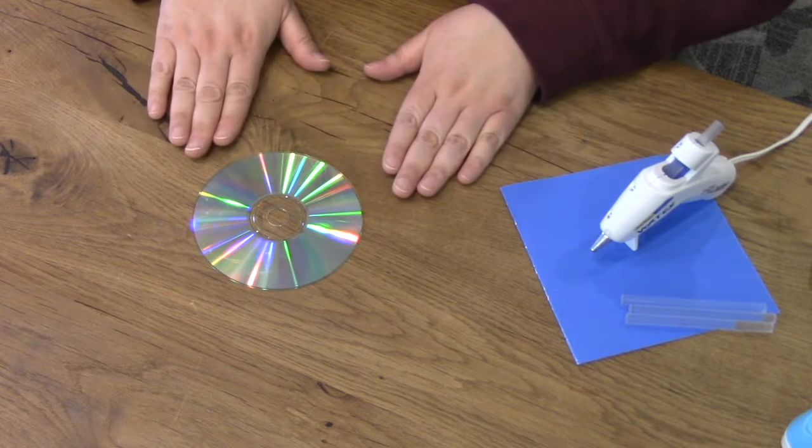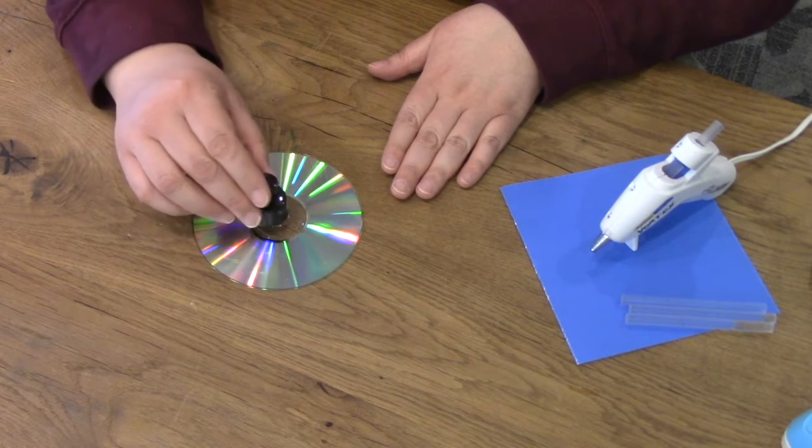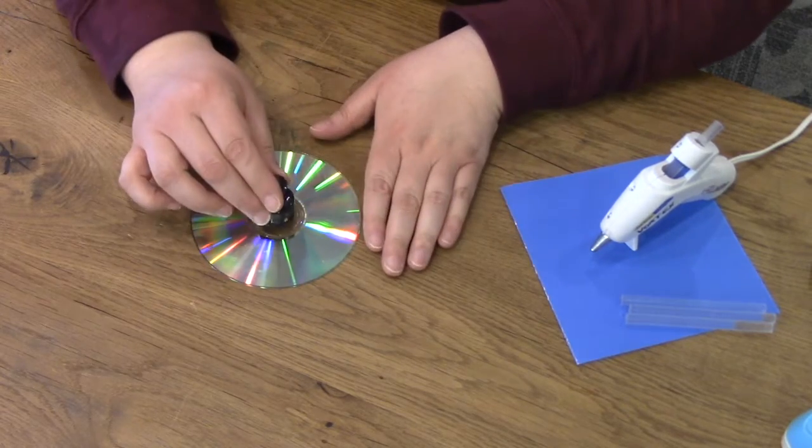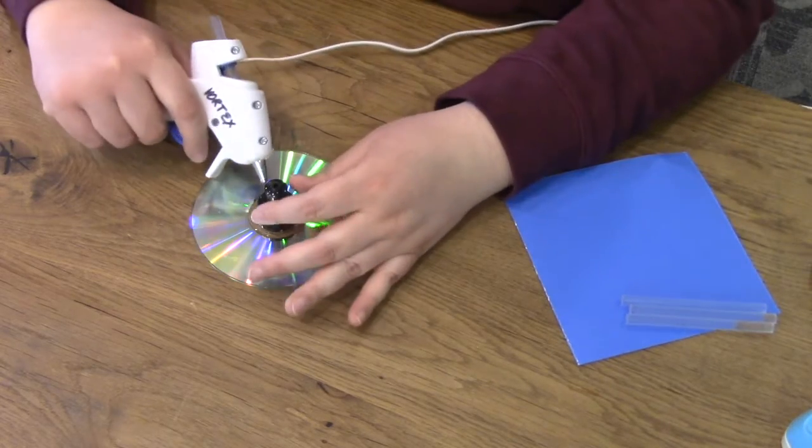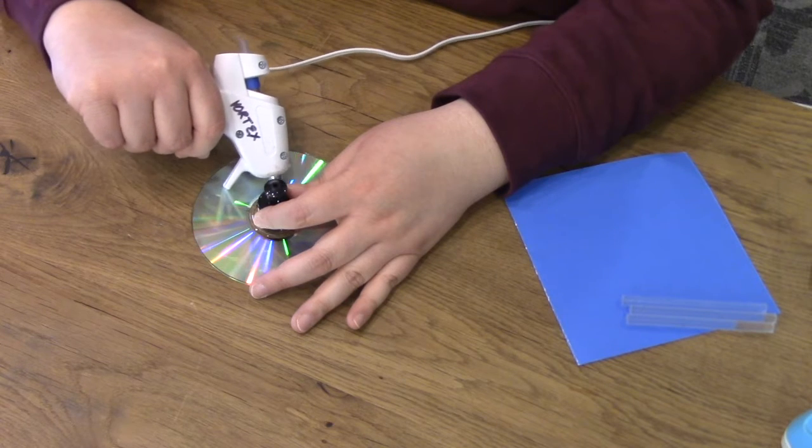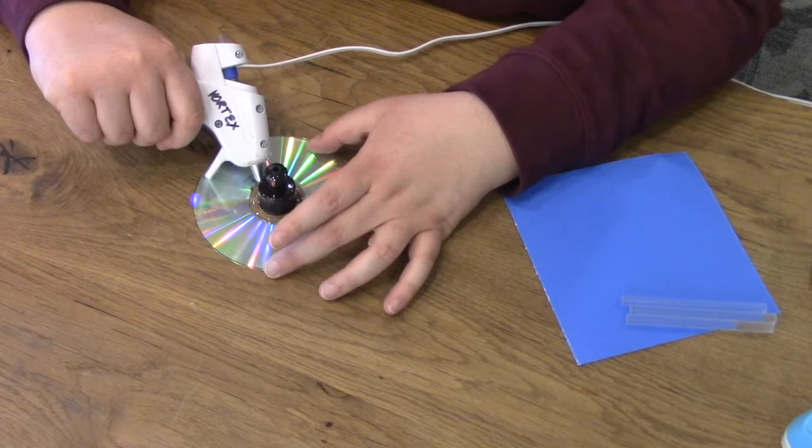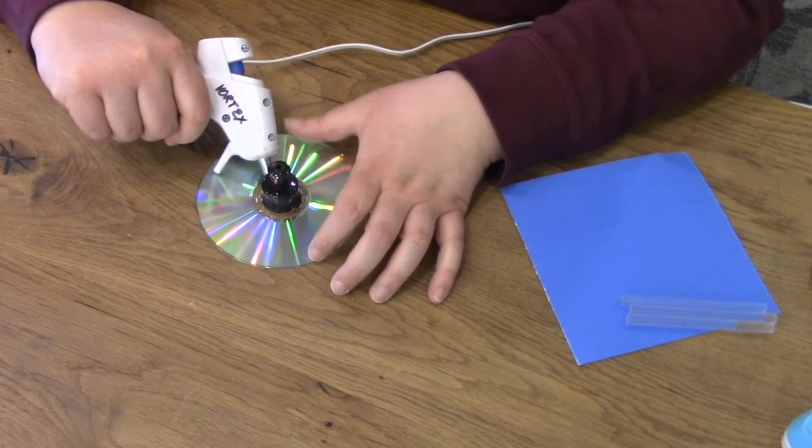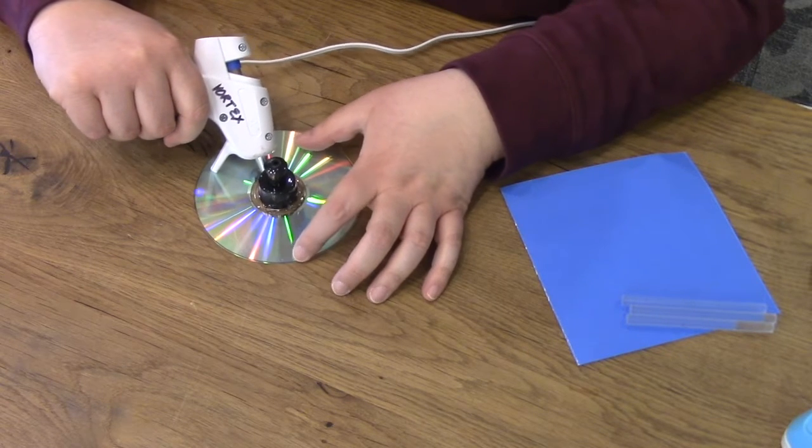The first thing we want to do is take our lid and put it right over the center hole in the CD. We're going to use our hot glue gun to attach the cap. You want to make sure you really have a good seal. I'm just going to run the glue along the bottom of the cap to glue it to the CD.